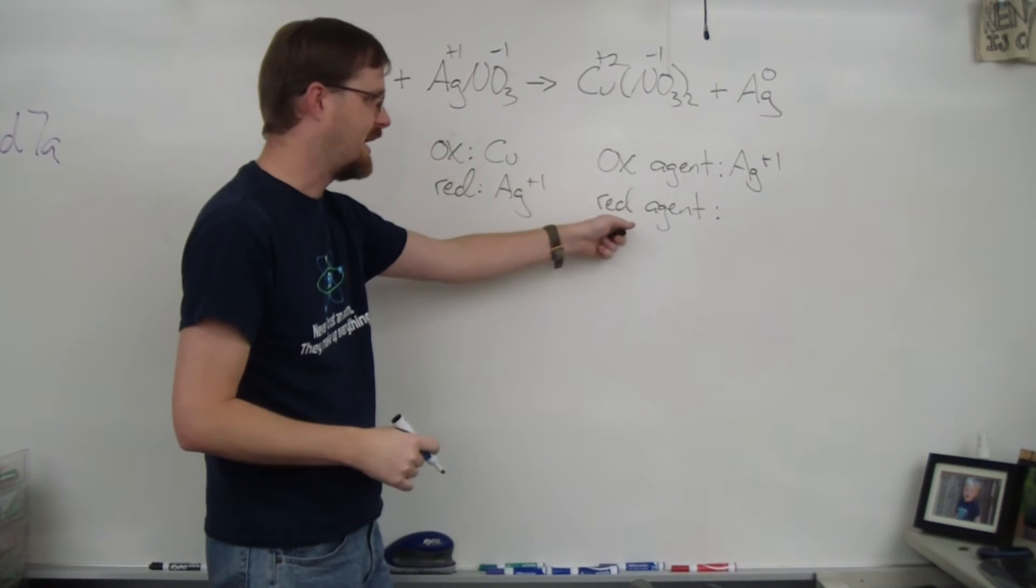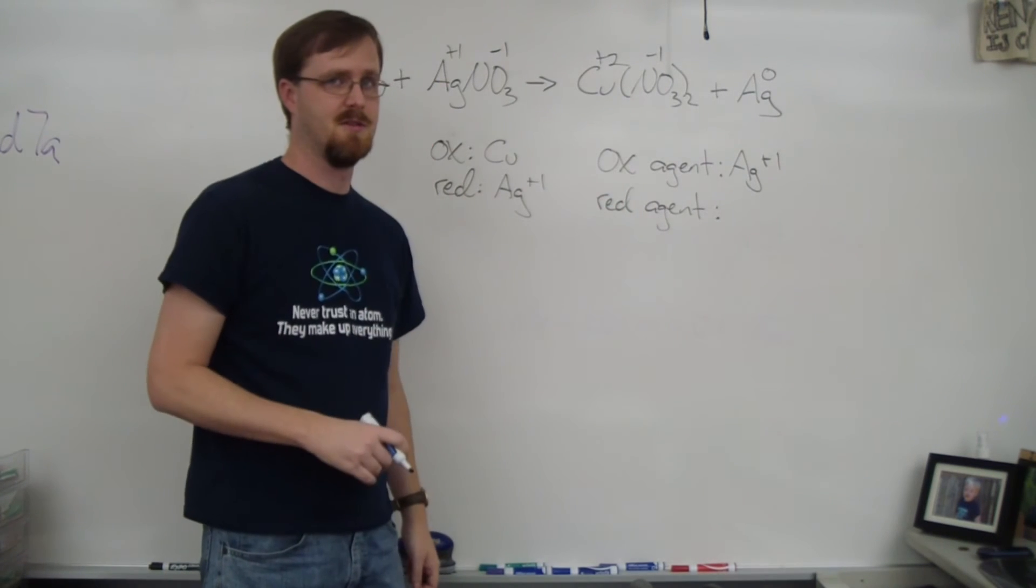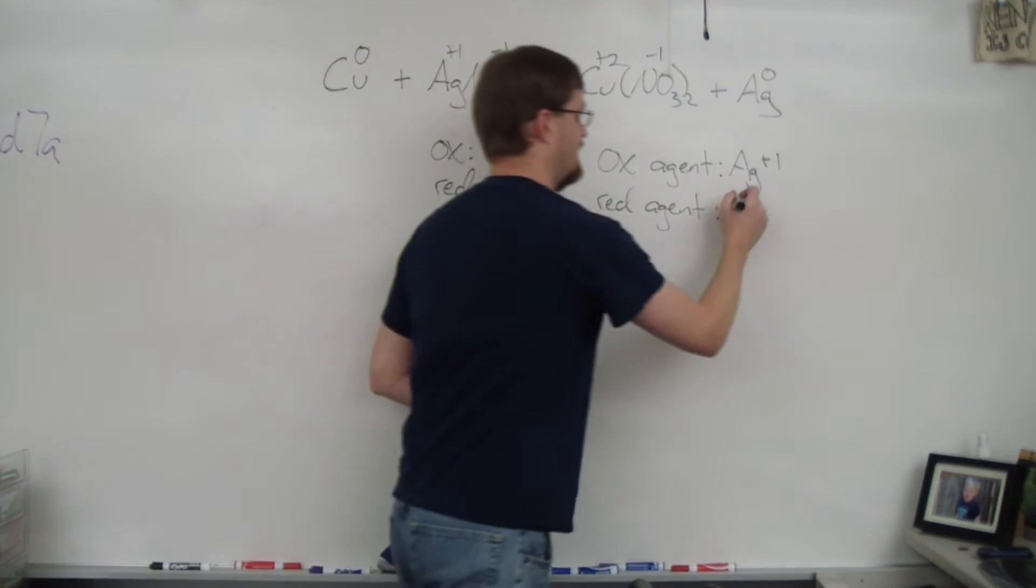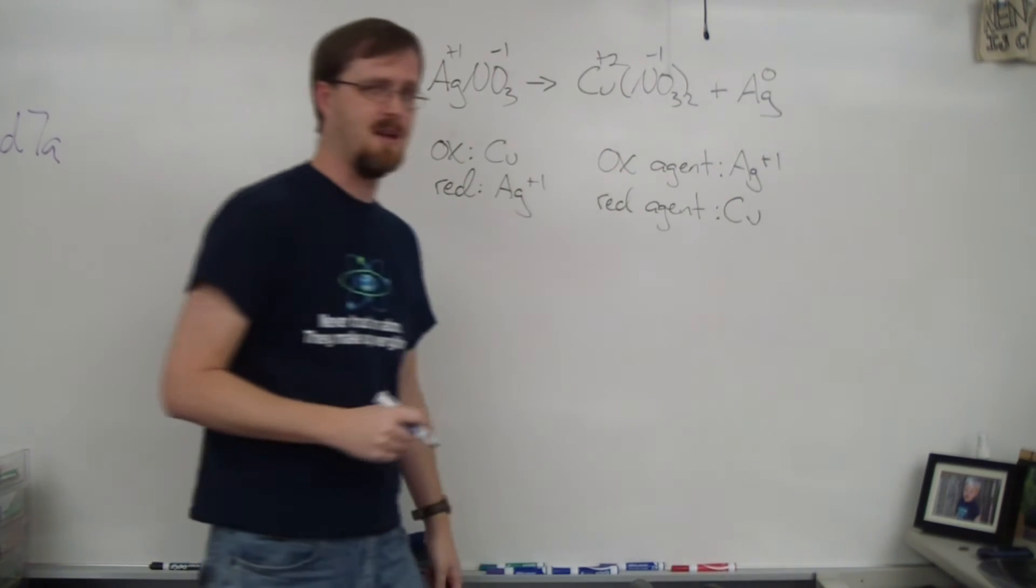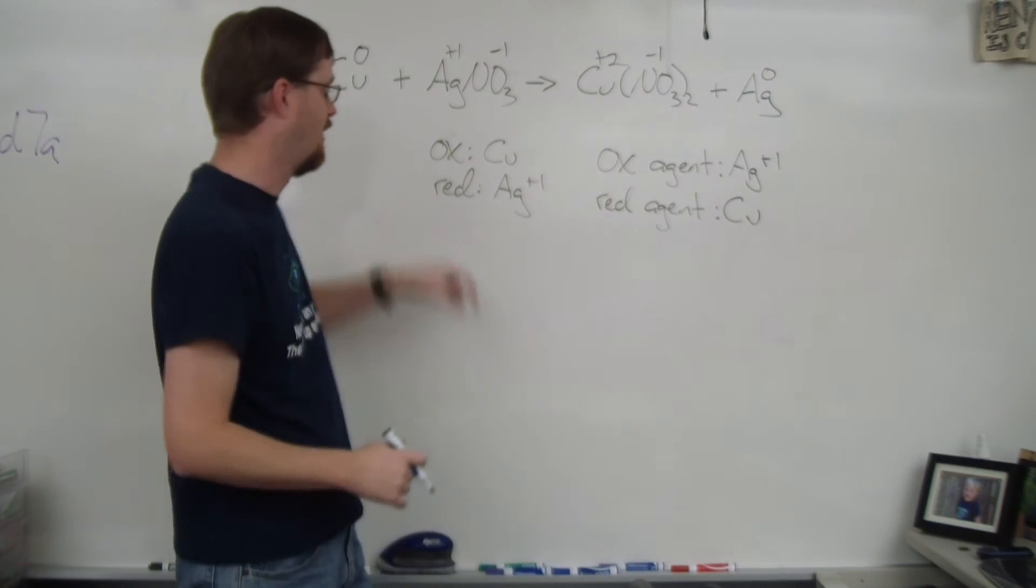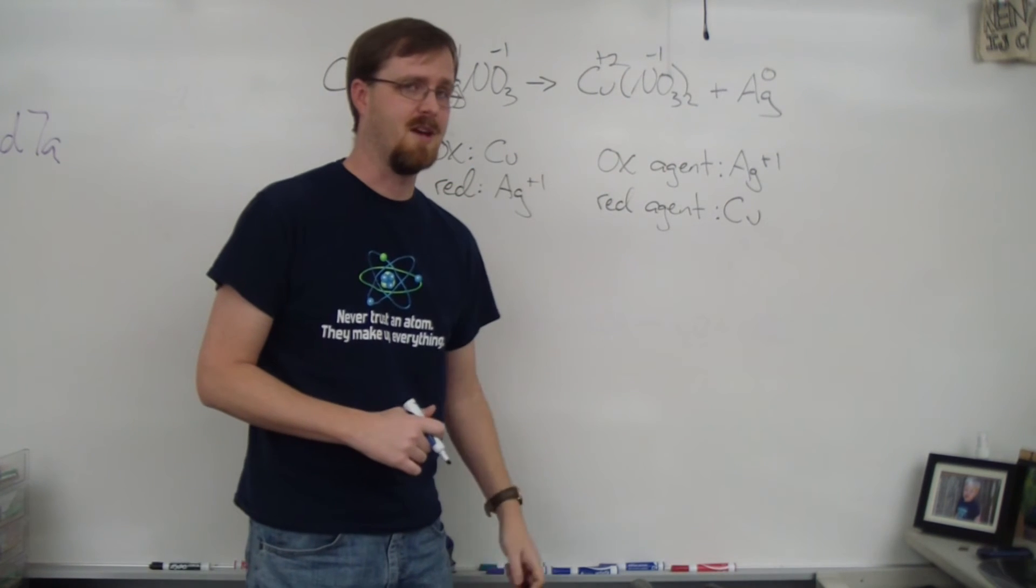The reducing agent is anything that causes something else to be reduced, and it causes something else to be reduced because it's the one being oxidized. So copper is the reducing agent. This is just the opposite game. Once you know what's oxidized and what's reduced, just flip them and you've got your agents.